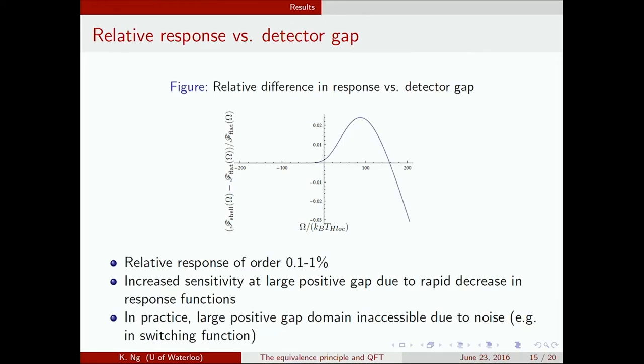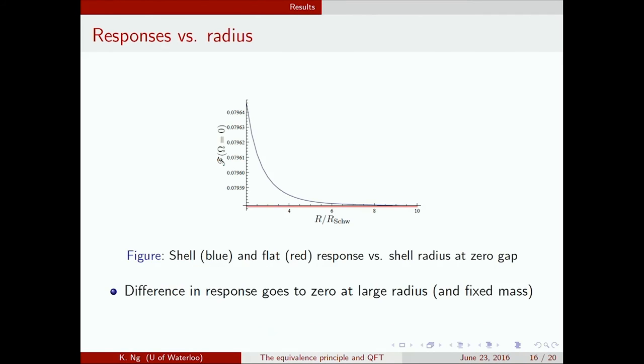We have demonstrated numerically that this detection is possible. It's a weak effect, but there is a difference between the shell and the flat case. Just to verify, I also plotted the difference in responses versus the radius. This is the response for the shell case and in red is the flat case. As you can see, it does seem to decay as we vary the radius of the shell versus the Schwarzschild radius. And as we'd expect, it decays.